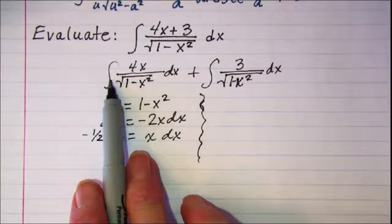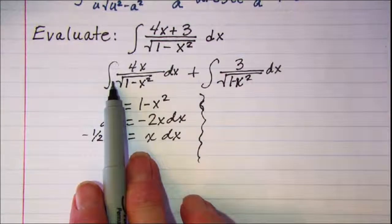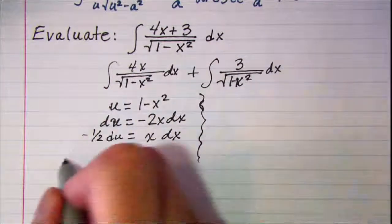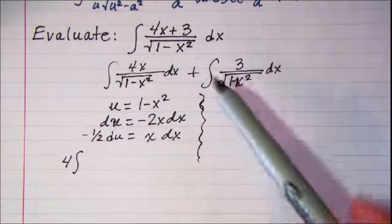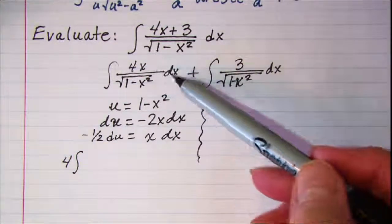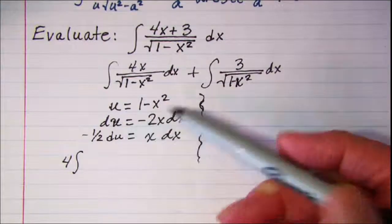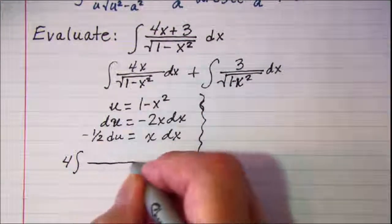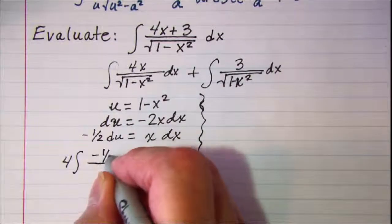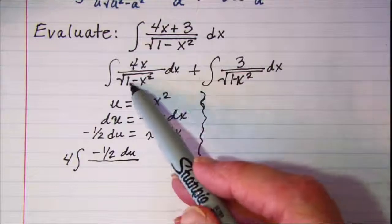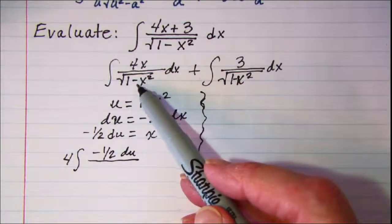Let me substitute in now. This 4 I'm going to bring out in front of the integral, and then in place of x dx I'll put negative 1 half du, and then in the bottom I have the square root of u.